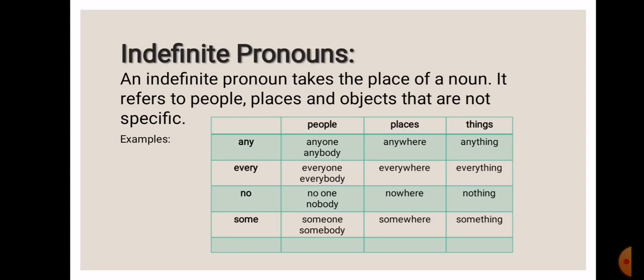Now, in this table you can see three columns here with people, places and things. Pronouns ending with O-N-E or B-O-D-Y are used to refer to people. For example, anyone, anybody, everyone, everybody, no one, nobody, someone, somebody.